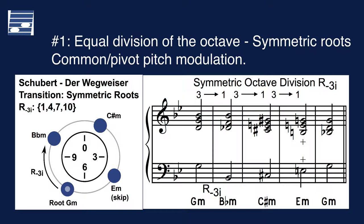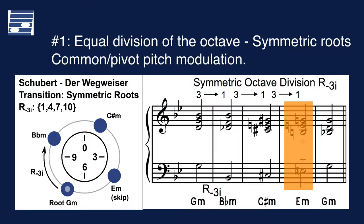The pitch-disc diagram on the left shows the four root pitch classes G, B-flat, C-sharp, and E, each at an interval of three semitones. That root movement is notated as a Schillinger system root cycle symbol R-3i. Schubert skips the E minor, instead returning from C-sharp minor to the tonic key G minor.